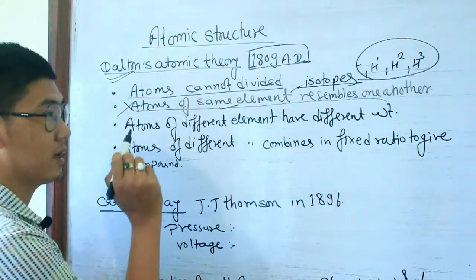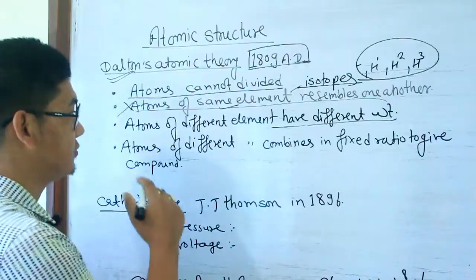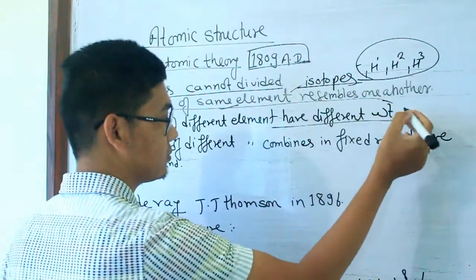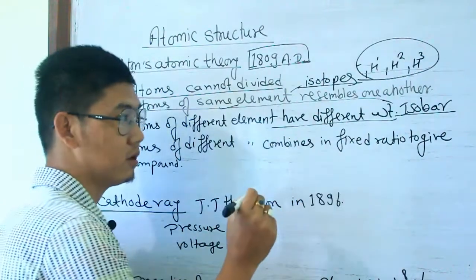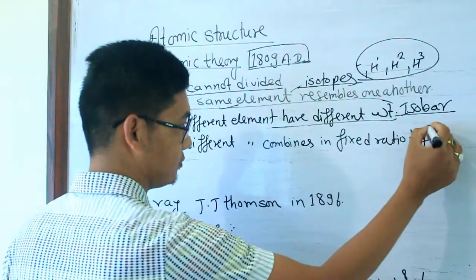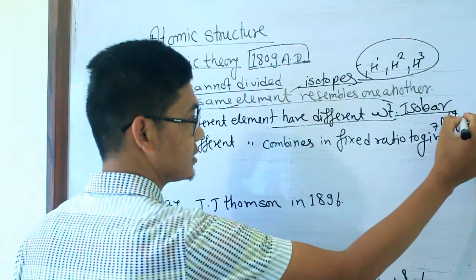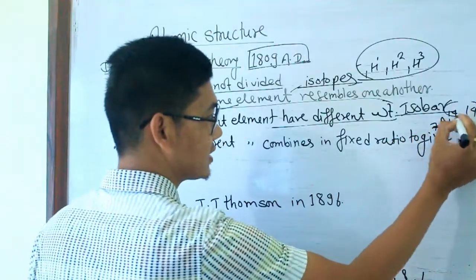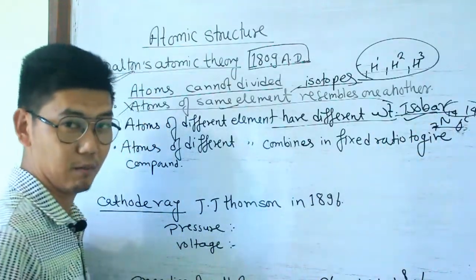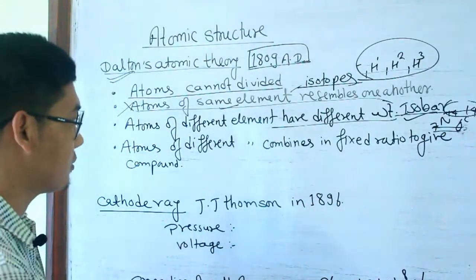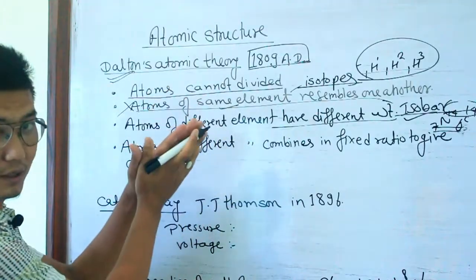This is a failure of Dalton's theory. Different atoms have different weight. The concept of isotopes and isobars contradicts Dalton. For example, C-14 shows that atoms of different elements combine in fixed ratios to give a compound. This is Dalton's Atomic Theory, which is very important in our examination.